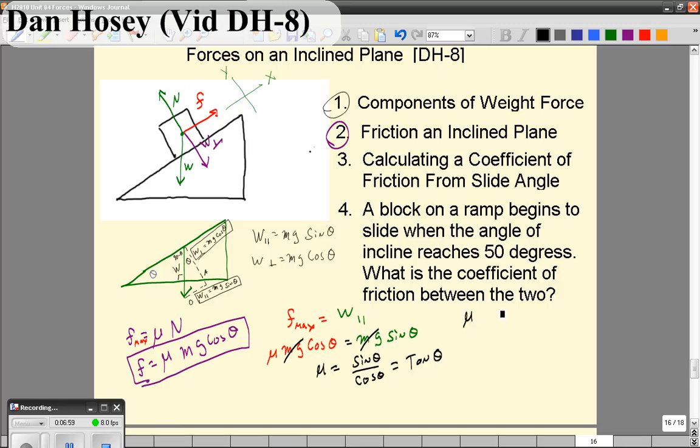So, if you want to know the coefficient of friction between two materials, put one on a ramp as the surface, put the other on a block or some other object to slide down, and just incline the ramp until it begins to slide. The angle at which it begins to slide will tell you the coefficient of friction. So, this is number three.